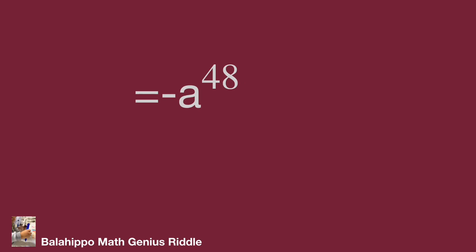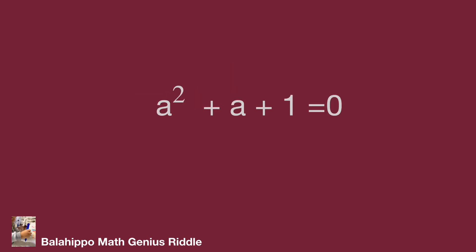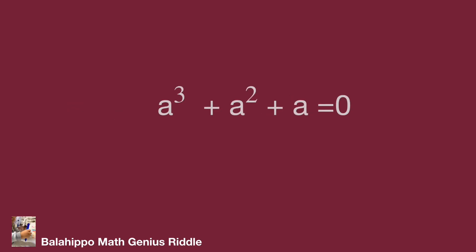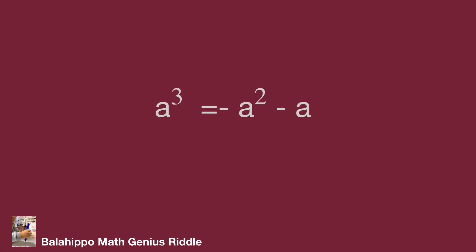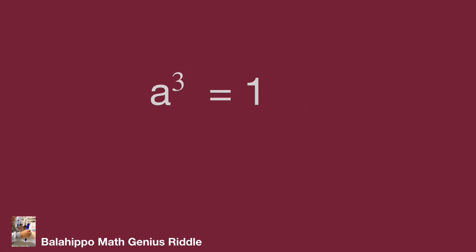Next step, we are going to handle minus a power of 48. In the given equation a squared plus a plus one equal to zero, multiply both sides by a: it becomes a cubed plus a squared plus a equal to zero. So a cubed equals minus a squared minus a. And we know that a squared plus a equals minus one. Substitute to get a cubed equal to one.